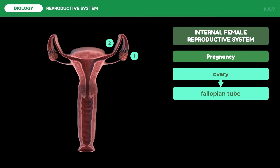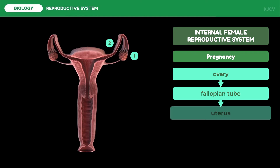The fallopian tubes function as a transport organ. With the help of ciliated and non-ciliated cells, the ciliated cells propel the egg cells to the uterus. The non-ciliated cells produce secretions to aid the ciliated cells with propulsion. Fertilization occurs in this organ. After being fertilized, the egg will travel down to the uterus.